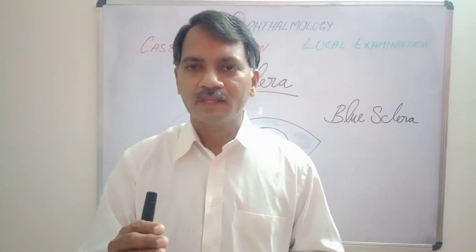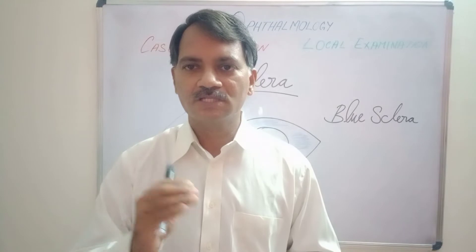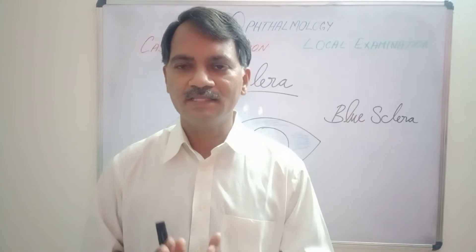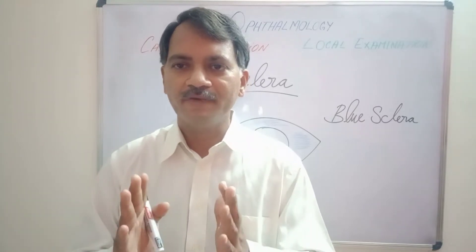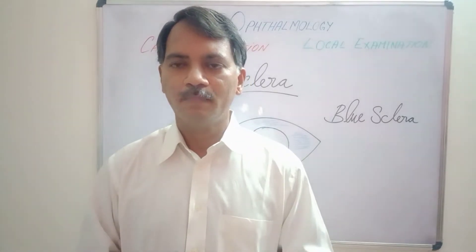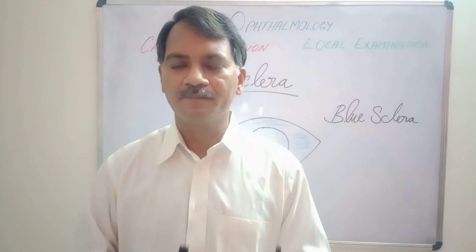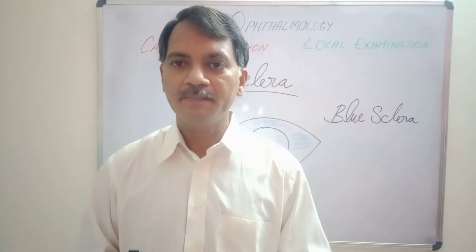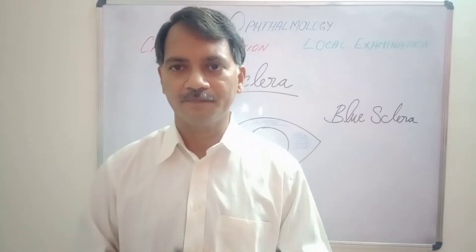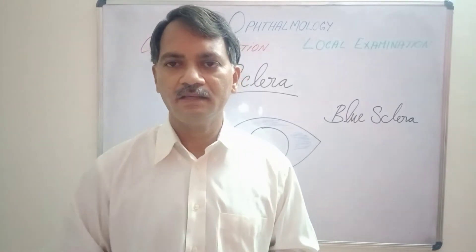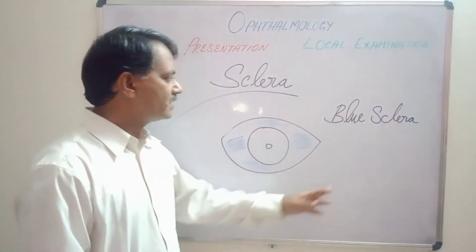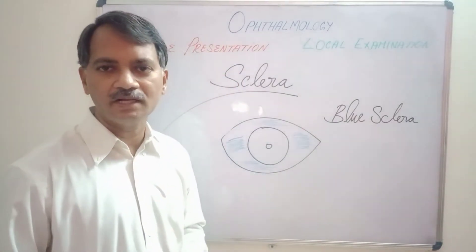Sclera is an avascular structure, like the cornea. Because it is avascular, the diseases of the sclera are very rare, but still there are some diseases in the sclera which may be blinding the eye. Let us see the diseases affecting the sclera one by one. The first and foremost is the blue sclera.